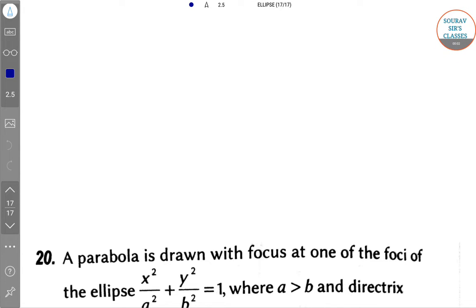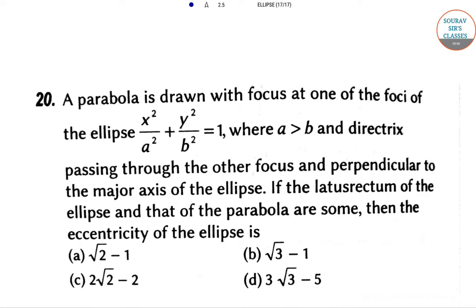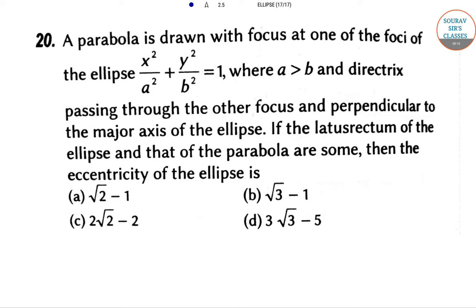Hello students, welcome to SolveStress classes. Let's discuss something regarding parabola, hyperbola, and ellipse - the conic sections of coordinate geometry. Your question goes like this: a parabola is drawn with focus at one of the foci of the ellipse x²/a² + y²/b² = 1, where a is greater than b, and the directrix passing through the other focus and perpendicular to the major axis of the ellipse.